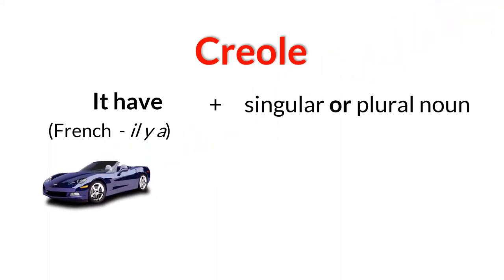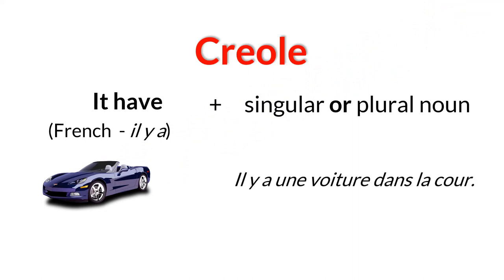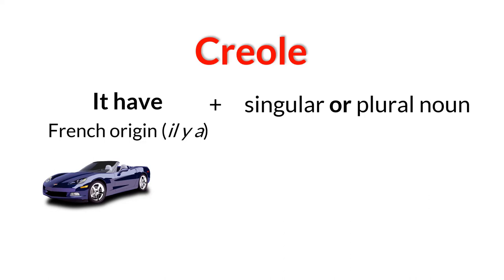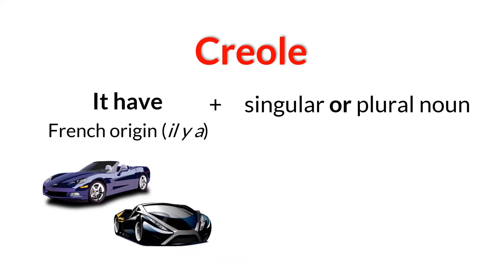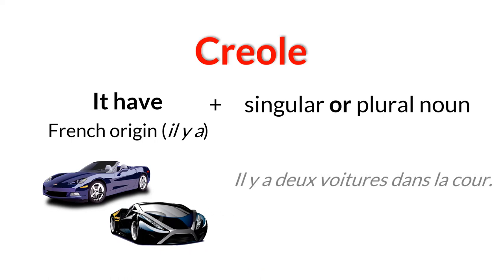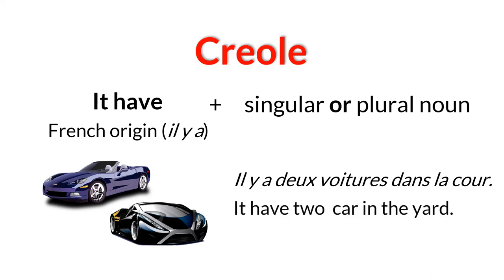If I wanted to tell someone in French that a car is parked in the yard, I might say "il y a une voiture dans la cour," which literally translates to "it have a car in the yard" — the Creole version. Now, if another car joined the first car in my yard, I might say in French "il y a deux voitures dans la cour." The Creole version is the translation: "it have two car in the yard."